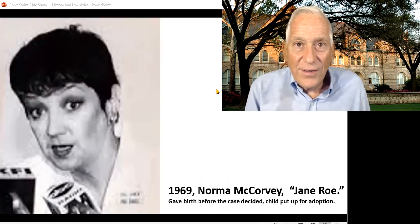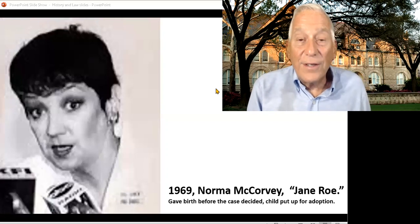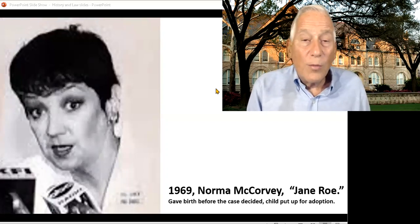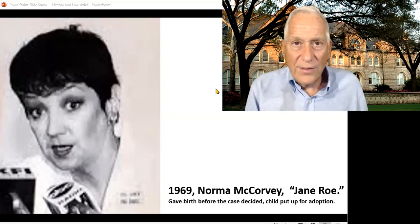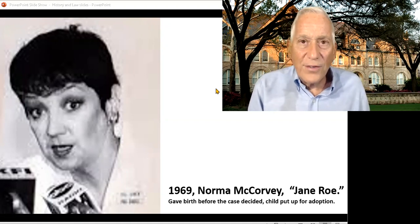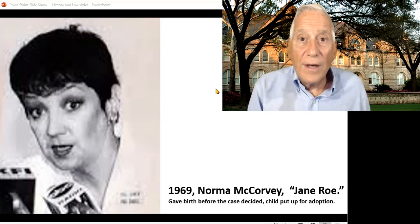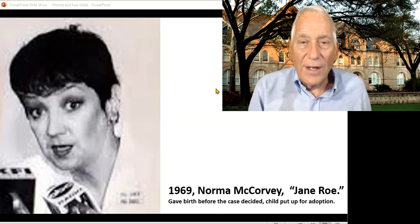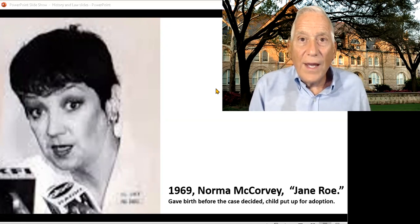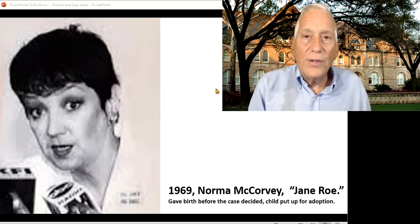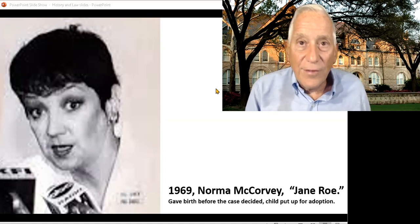It begins in 1969, when Griswold v. Connecticut is being decided, with a poor woman from Texas who gets pregnant. Her name is Norma McCovey, and she doesn't want to have the child. She can't afford to have the child, and she wants an abortion.